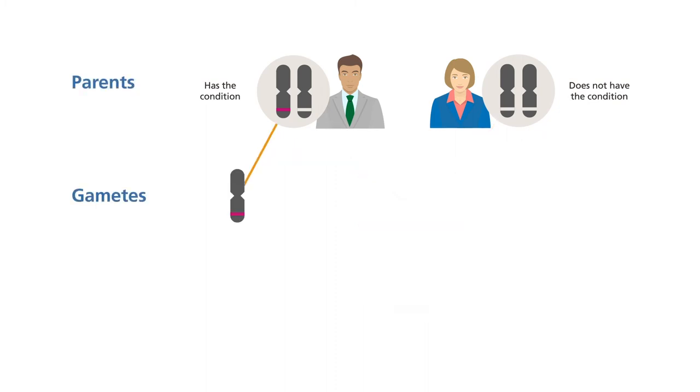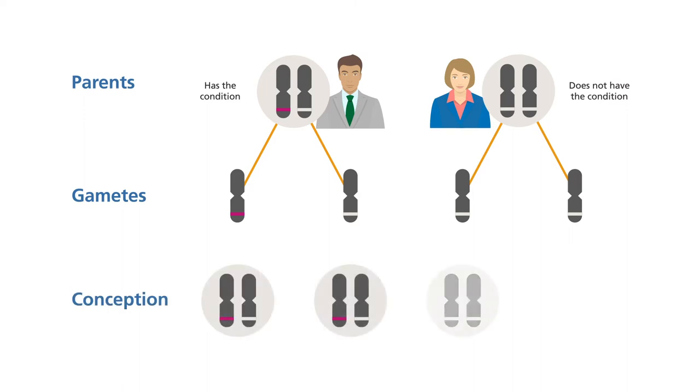A parent passes on one from each pair of their chromosomes to each child. Which one they pass on is down to chance. There are therefore four possible combinations of chromosomes that the children of this couple could inherit.